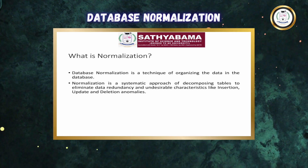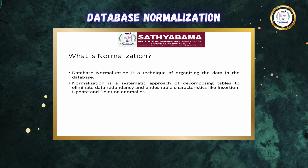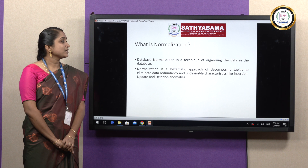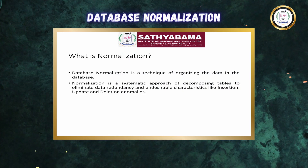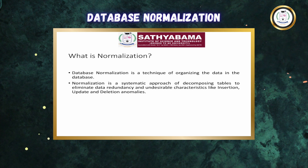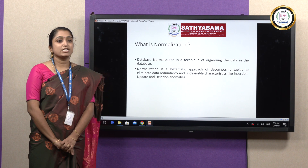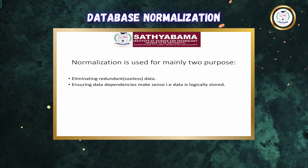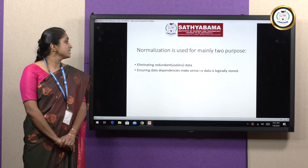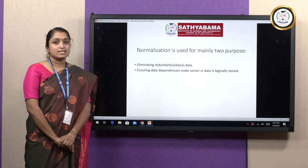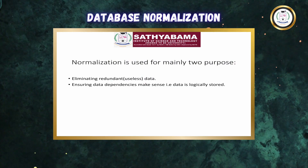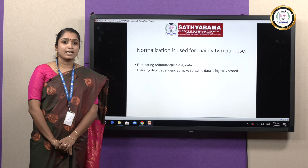What is normalization? Database normalization is a technique of organizing the data in the database. It is a systematic approach of decomposing tables to eliminate data redundancy and undesirable properties like insertion, updation, and deletion anomalies. Normalization is used for mainly two purposes: eliminating redundancy in data, and ensuring data dependencies make sense — that means the data is logically stored.